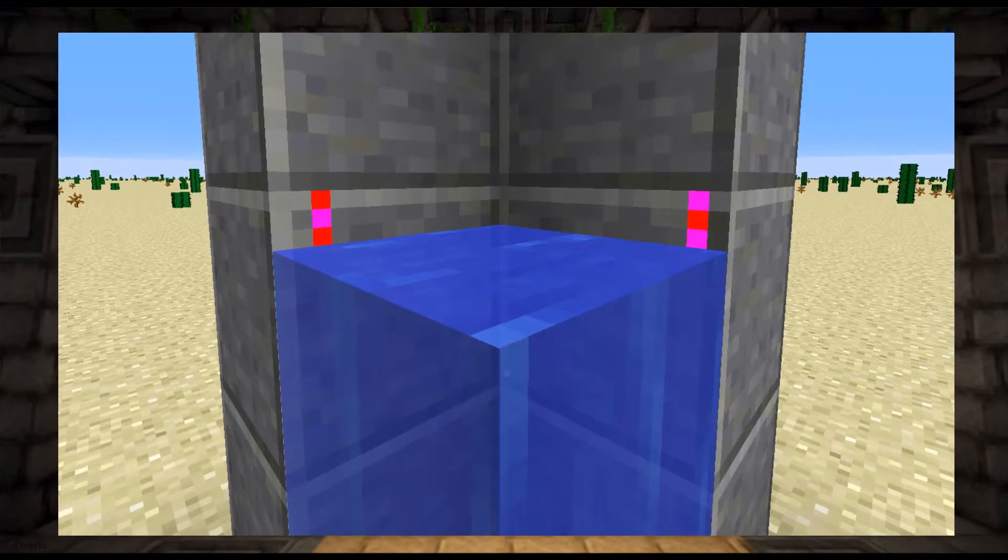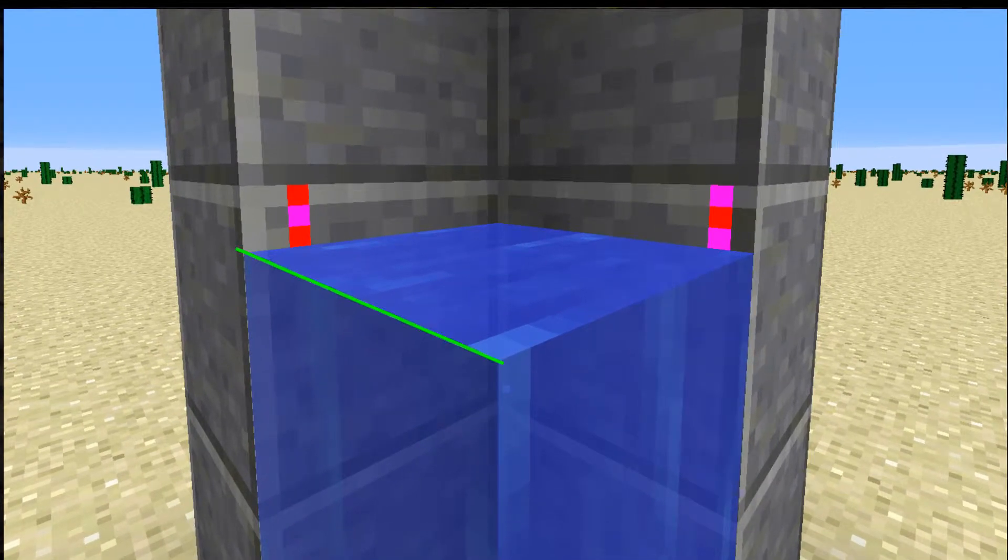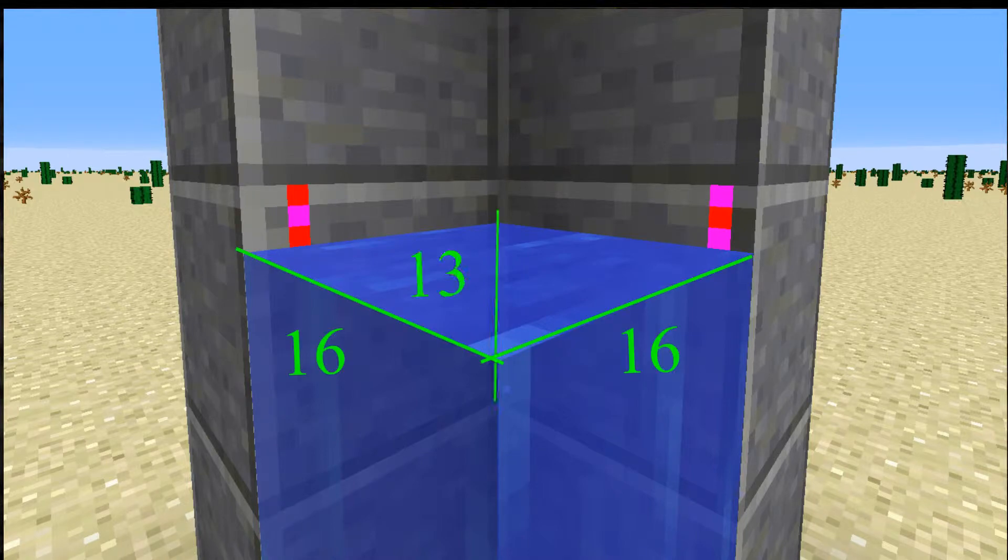From the image we can tell that there are 3 pixels not being filled since the dimensions of every block in Minecraft is 16x16x16 pixels. The length and the width of the source block is 16 pixels and the height is 13 pixels.